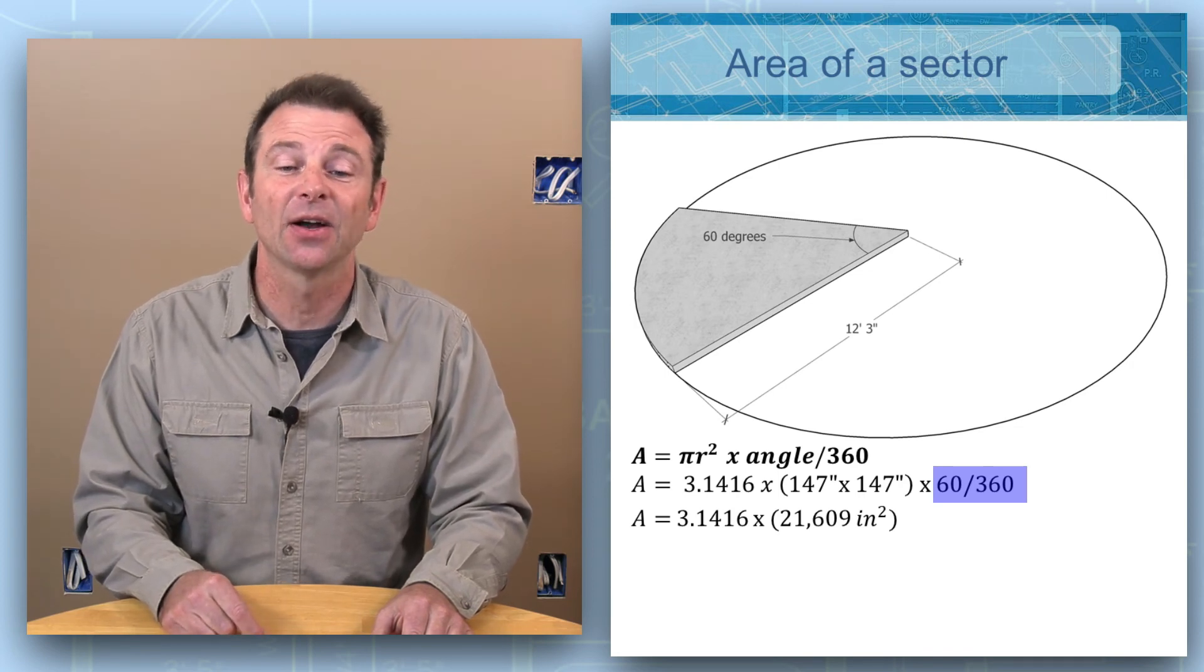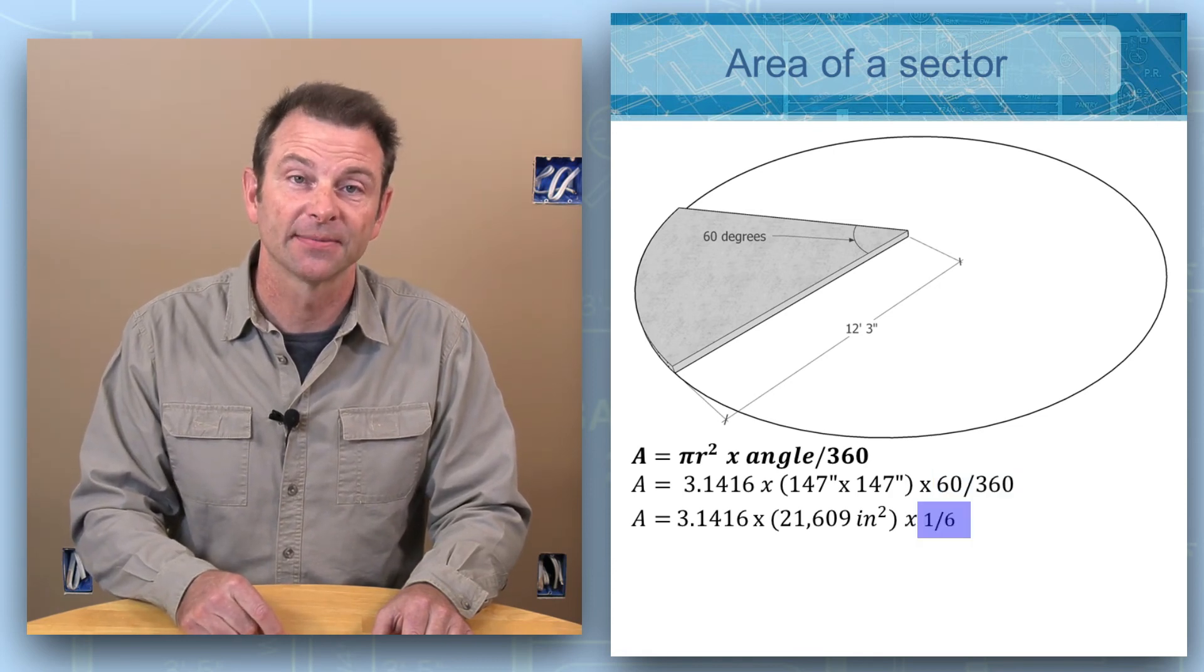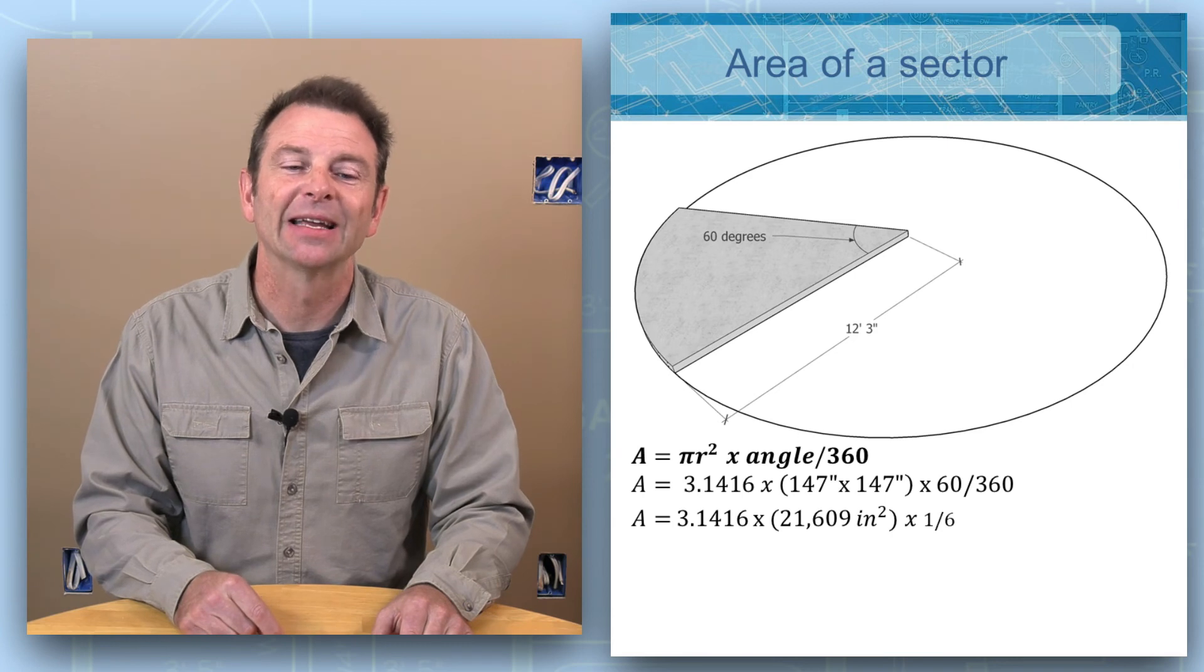We can simplify that as a fraction, and 60 over 360 can be expressed as a simpler fraction of 1 over 6.